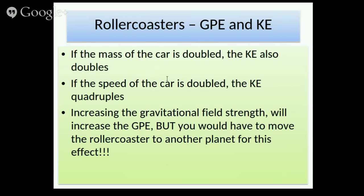Two crucial laws you must learn: if the mass of the car is doubled, the kinetic energy also doubles; but if the speed of the car is doubled, the kinetic energy quadruples. A memory tip from a student: a car has four wheels, so if speed goes up, kinetic energy goes up by four (quadruples); if you put two people in the car, kinetic energy just doubles.